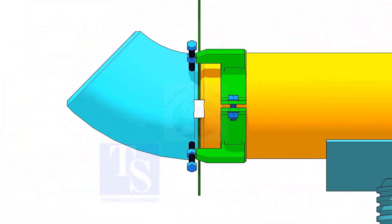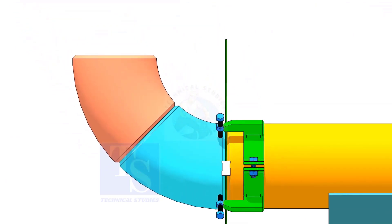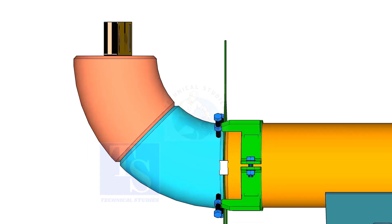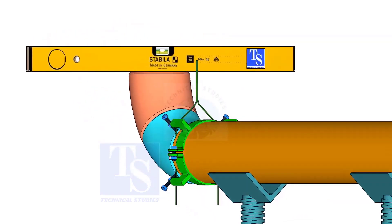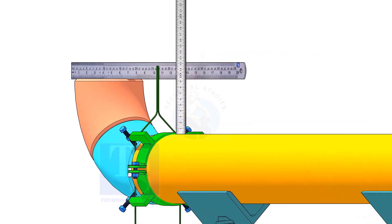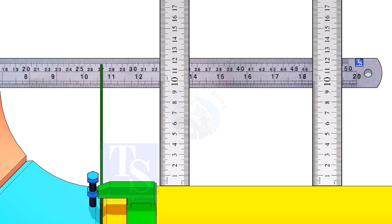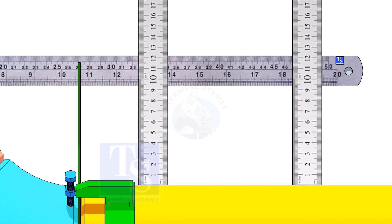Hold another elbow of 45 degree on the top of this elbow. Level this elbow horizontally. Measure the distance, as shown, if correct, tack weld on the top and bottom side of the joint.